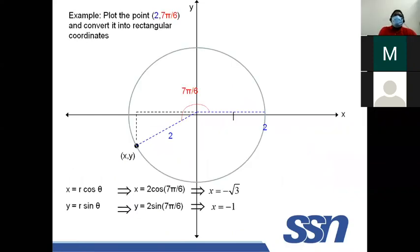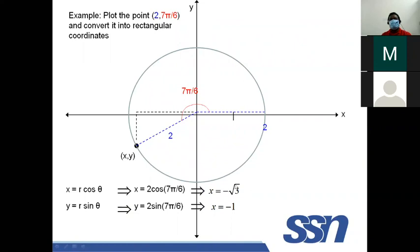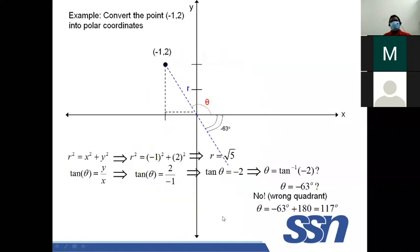Consider the point (2, 7π/6) in polar coordinates. The radius is 2 units, and we measure the angle 7π/6 in the anticlockwise direction. To find X and Y in Cartesian form: X equals R cosine theta equals 2 cosine(7π/6) which gives minus root 3, and Y equals R sine theta equals 2 sine(7π/6) which gives minus 1. The sign is automatically handled when theta is measured anticlockwise.